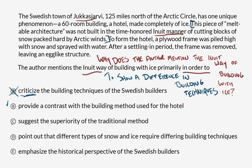Choice C: to suggest the superiority of the traditional method? Since they didn't criticize the building techniques of the Swedish builders, I don't see any evidence in the passage that suggests the Inuit way is necessarily superior. If that is the author's point of view, it doesn't come across in this passage. So I'm going to say nope.